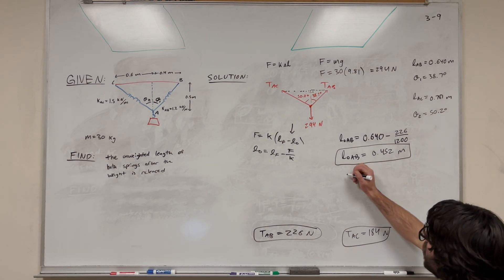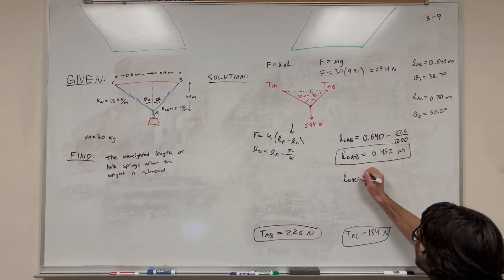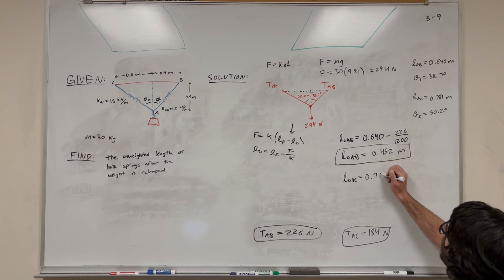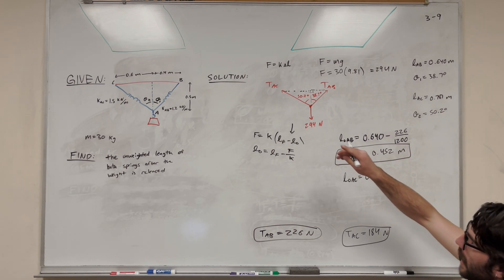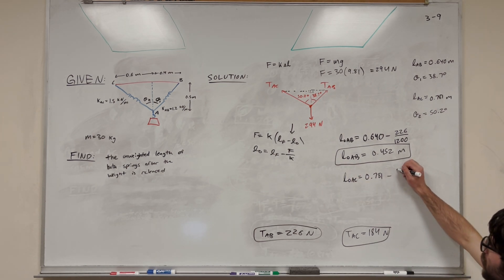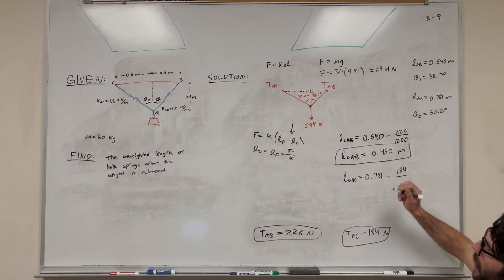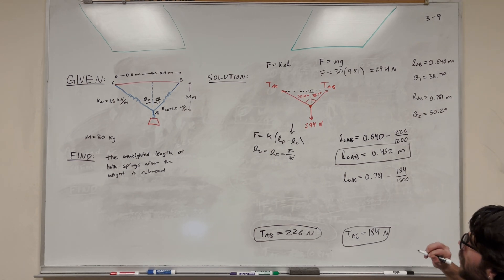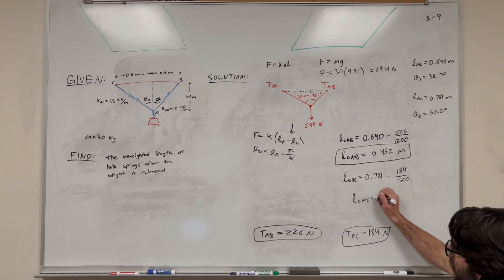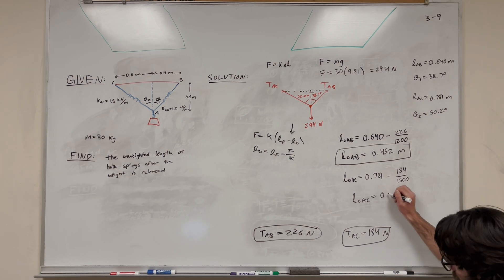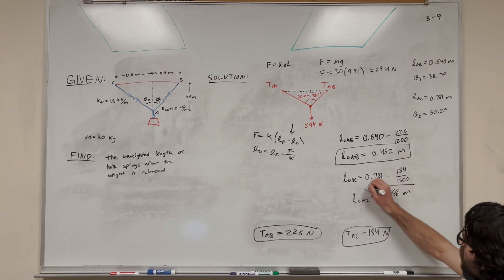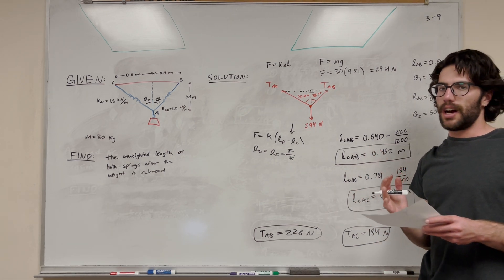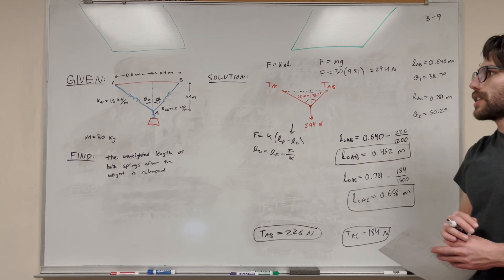Now we do the same for spring AC. L_naught AC equals 0.781 meters minus 184 newtons divided by 1,500 newtons per meter, giving length initial AC equal to 0.658 meters. Both values are smaller than the stretched lengths, which makes sense because the springs shrink when you remove the weight.